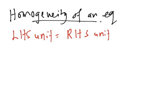For example, let's say you are given the equation v² equals to u² plus 2as. What we need to do is to look at the unit of v² and check whether the unit of u² and 2as — whether all these units are the same.